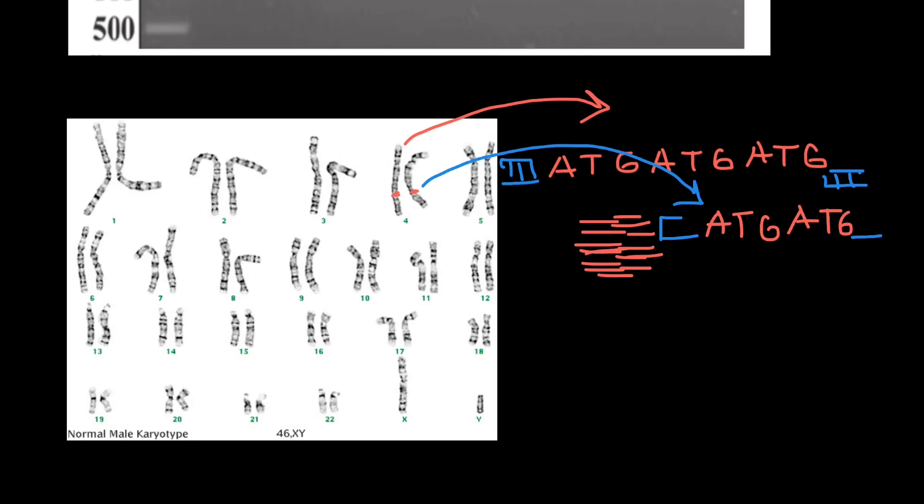The same primers are going to be used for the same locus. This time, we're going to get a PCR product which is going to be slightly smaller than the first one, because here we have only two repeats, so six nucleotides, and here we have three repeats and nine nucleotides.